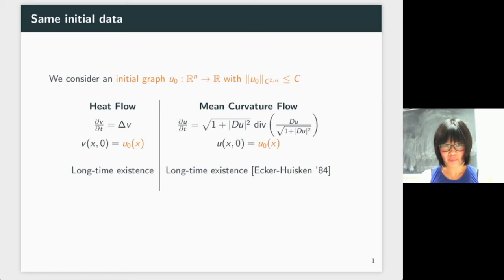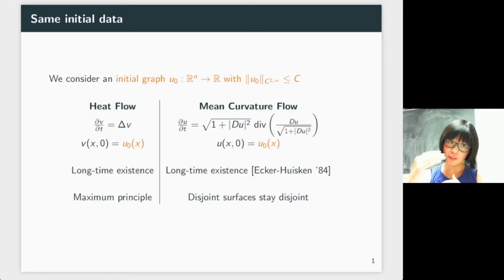For the heat flow, there is a maximum principle saying that if the initial condition of two flows—one is strictly higher than the other—then as the flow evolves, the one that starts higher will stay higher than the one that starts lower, so there's no intersection.